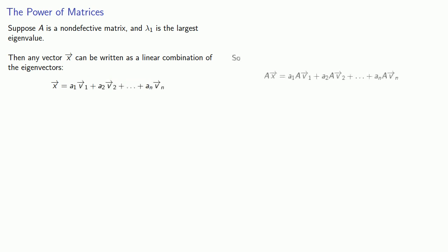So Ax is going to be the linear combination where A is applied to each of the eigenvectors. But since vi is an eigenvector for A with eigenvalue lambda i, we can rewrite this.